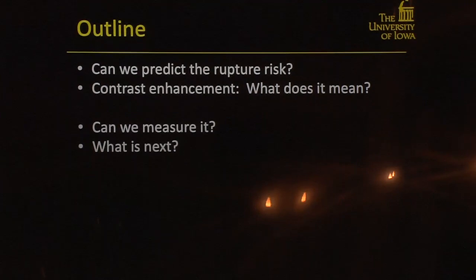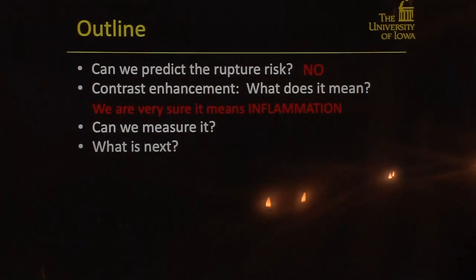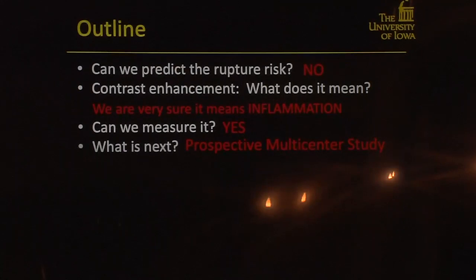To finalize: can we predict the risk of rupture? No, but we are getting closer. We need to use all these tools together — vessel wall signal intensity, QSM, age, family history — and come up with a validated score. Contrast enhancement almost certainly means inflammation and is not just an artifact. We can measure it. Next steps are to improve the technique, validate our data, and hopefully conduct a prospective multicenter study.